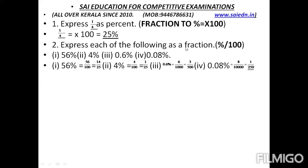To summarize: when converting percentages to fractions, we divide by 100. 56% gives 56 divided by 100, which is 14 by 25. 4% gives 4 by 100, which is 1 by 25. For 0.6%, we get 6 divided by 1000, which is 3 by 500. For 0.08%, with two decimal places, we get 8 by 100 into 100, giving 1 by 250.